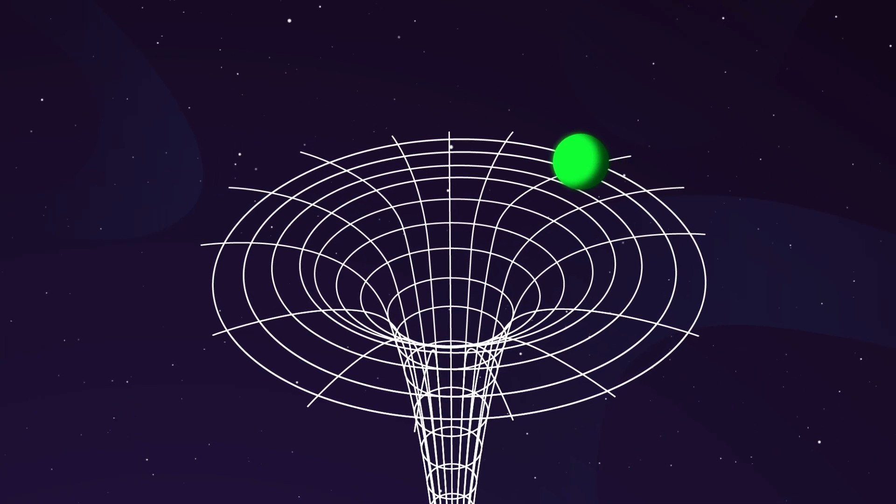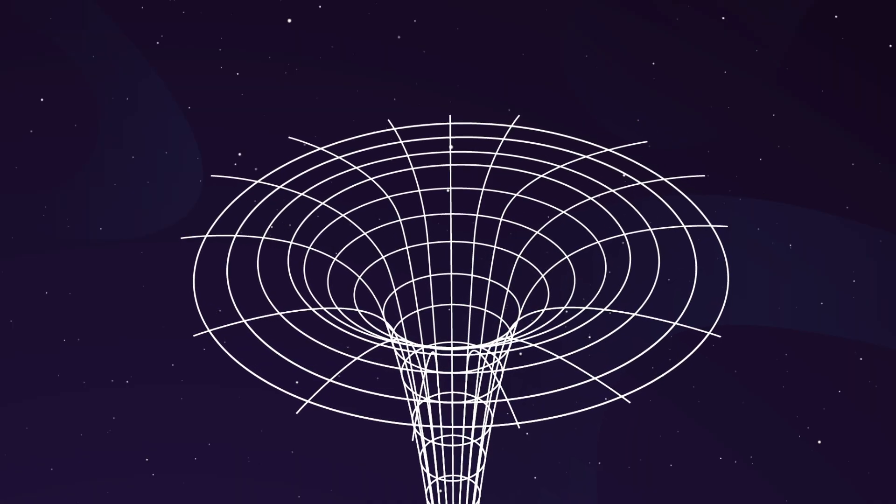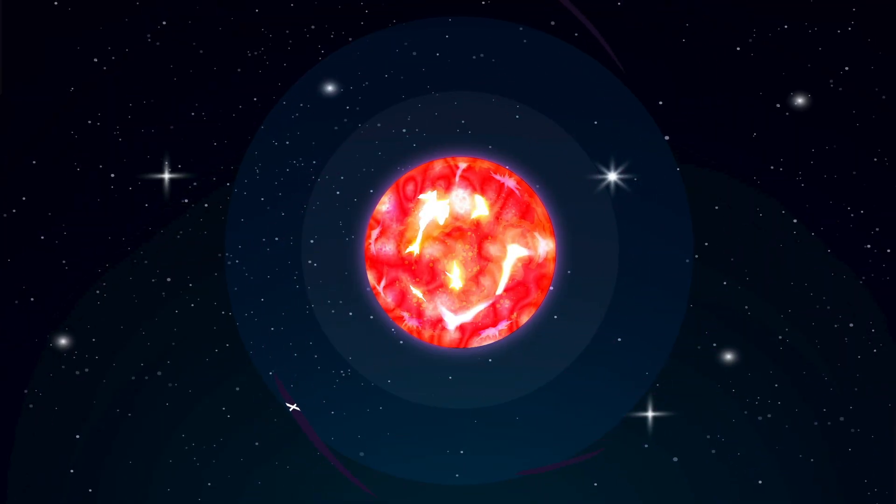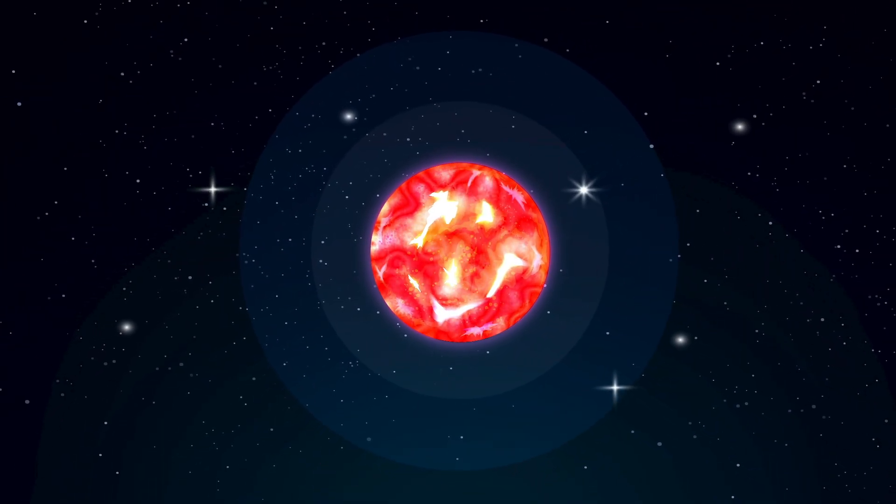When an object crosses the event horizon, it falls toward the black hole's singularity, and, as far as we know, will never return. Some stars can supernova and form a black hole, but not every star is massive enough to create one.